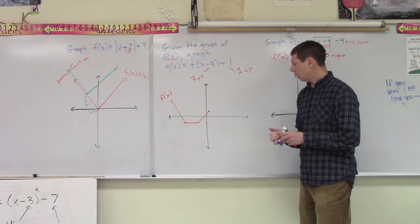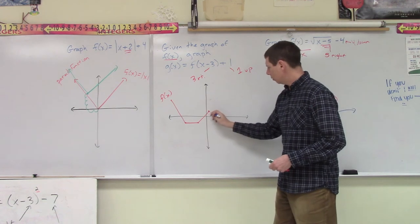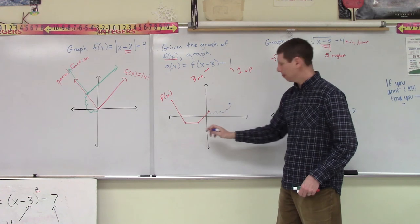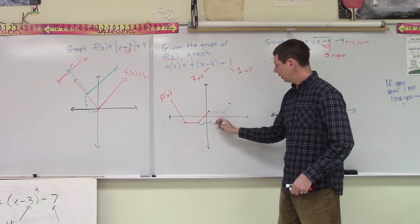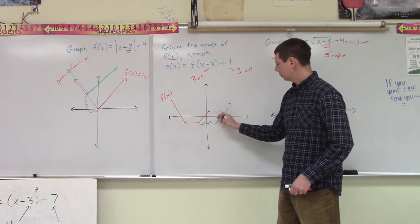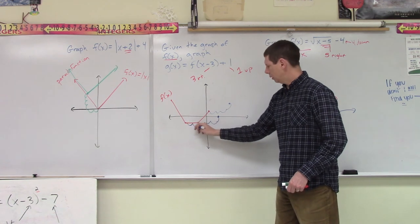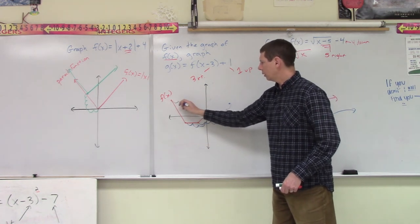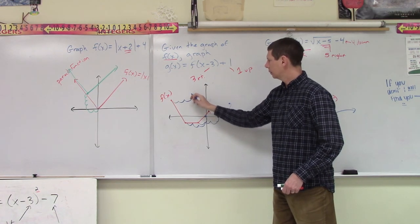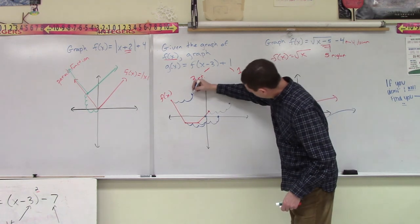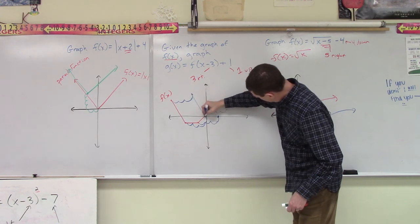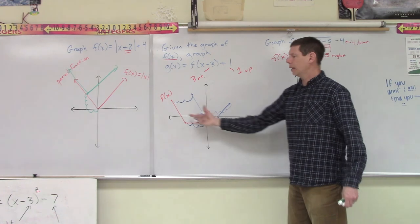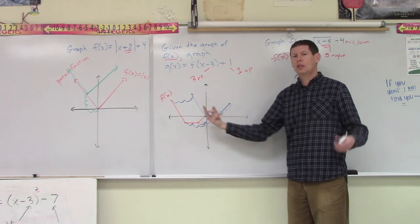So if we take all our points and move them 1, 2, 3 to the right, and 1 up. 1, 2, 3 to the right, and 1 up. 1, 2, 3 to the right, and 1 up. If we connect those, we're going to get this same graph just shifted over.